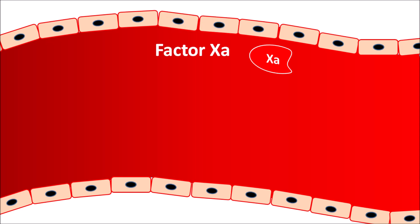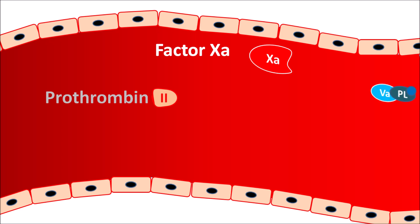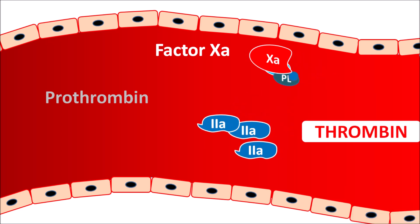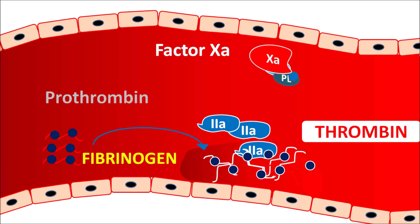Within the intima of the blood vessels, factor 10a plays an important role in clot formation. This factor 10a activates another factor — prothrombin, or factor 2. Normally factor 2a requires other cofactors like factor 5a, phospholipids, and calcium. These cofactors and minerals combine with factor 10a, which then interacts with prothrombin 2 such that it is converted into factor 2a. Now factor 2a is thrombin, the active form of factor 2, and this can convert the precursor fibrinogen. This fibrinogen is converted into a fibrin meshwork by factor 2a.